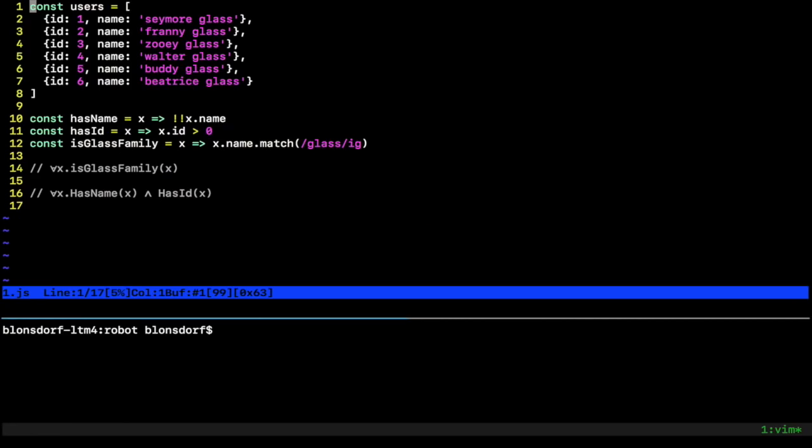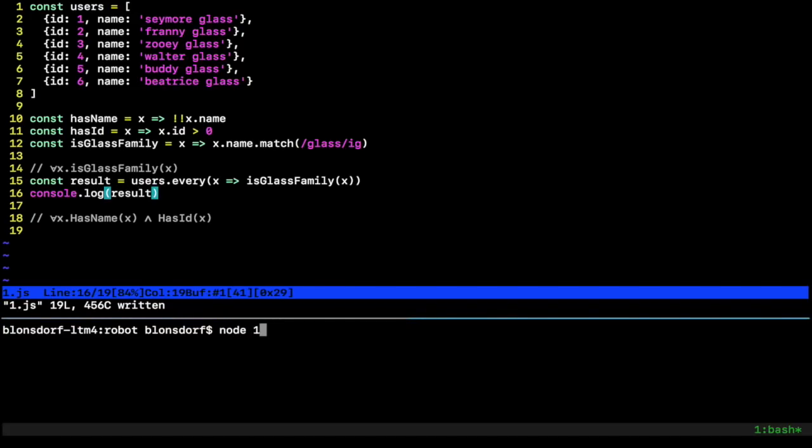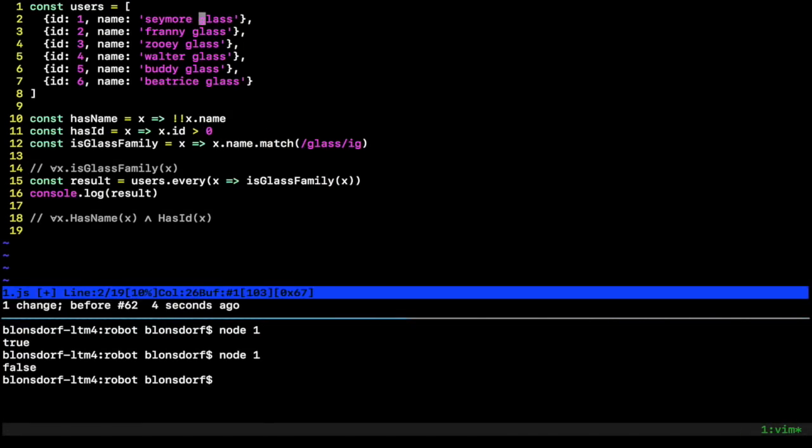So let's look at some code. Okay. We're looking at some code here. We have some users and some helper functions, name, ID is glass family here. And we want to write this in code for all X is glass family X. Okay. Should be pretty easy. All we have to do is say users is our all our users, every. And we take each user and we just say is glass family on it and that should hold, that should be true. So let's just verify that it's a result. It's console.log our result here and run it. And that is true. There we go. If we break it, if we kind of break somebody's last name to not be glass, it's false. So nice and easy for all.